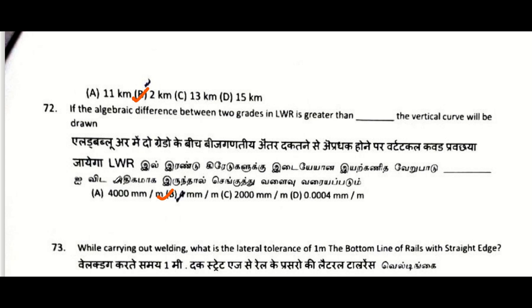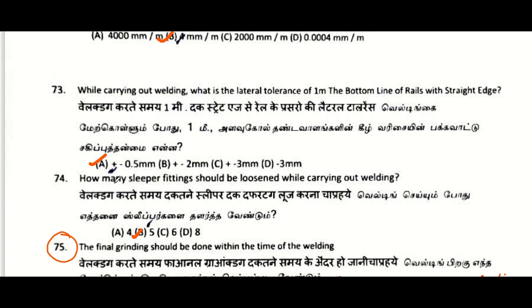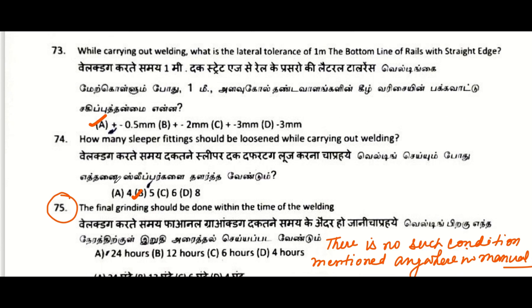Hot weather patrolman beat on single line in LWR: 2 km. If the algebraic difference between two grades in LWR is greater than 4 mm per meter, a vertical curve can be drawn. While carrying out welding, what is the lateral tolerance of one meter bottom line of the rails with the straight edge: plus or minus 0.5 mm.